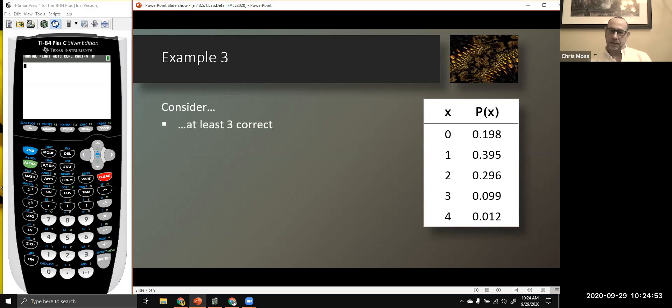Now, at least three correct. At least three correct. That's three or more. So there we go. Those are the outcomes where we have at least three correct.